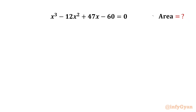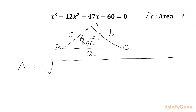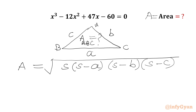So let us get started by considering area equal to A. I will draw one triangle ABC — this is A, B, and C. So this side would be small a, here we will write small b, here we will write small c. We are going to calculate the area of triangle ABC using Heron's formula: Area = √(S(S-a)(S-b)(S-c)), where S is the semi-perimeter, so S = (a + b + c) / 2.